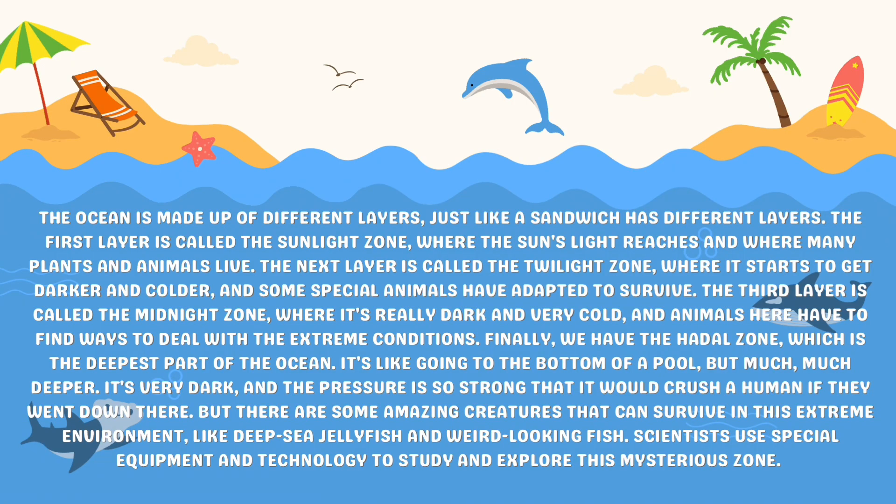To summarize, the ocean is made up of different layers just like a sandwich has different layers. The first layer is the sunlight zone, where the sun's light reaches and where many plants and animals live. The next layer is the twilight zone, where it starts to get darker and cooler and some special animals have adapted to survive. The third layer is the midnight zone, where it's really dark and very cold and animals have to find ways to deal with extreme conditions.